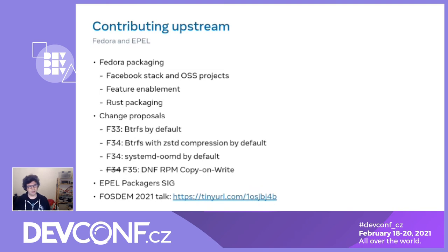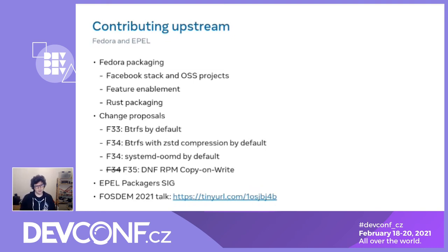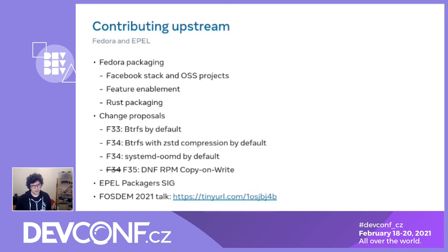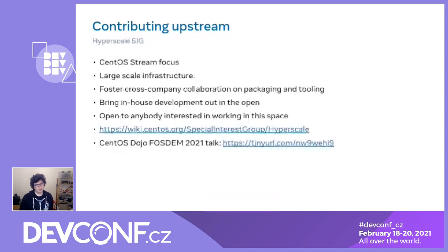We've done feature enablement work and started getting involved with the Rust SIG. We've also had several change proposals: for Fedora 33 we worked with the community to switch Fedora to use Btrfs by default; for Fedora 34 we are working to have zstd compression by default and to switch from early-oom to systemd-oomd; the DNF copy-on-write work is also in the Fedora 34 timeframe though deferred to 35; and we're doing work with the EPEL packaging SIG to make it easier to get packages branched and updated for EPEL.